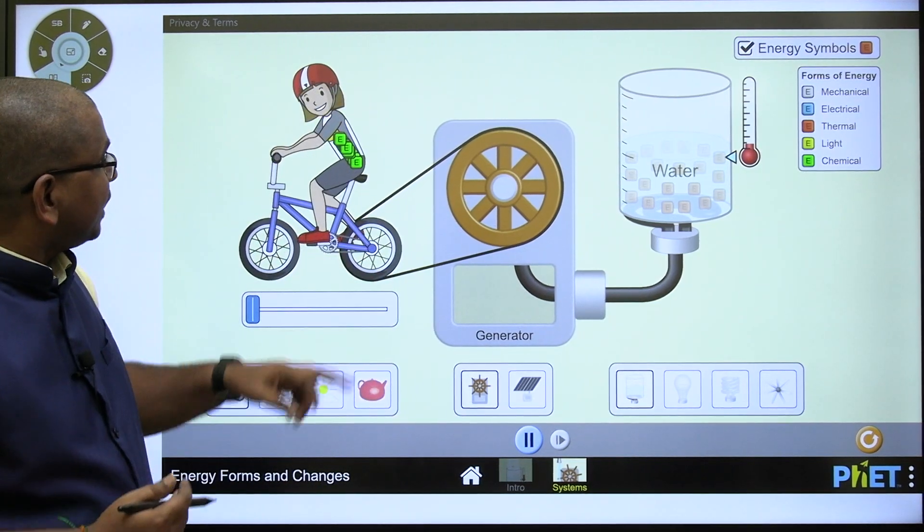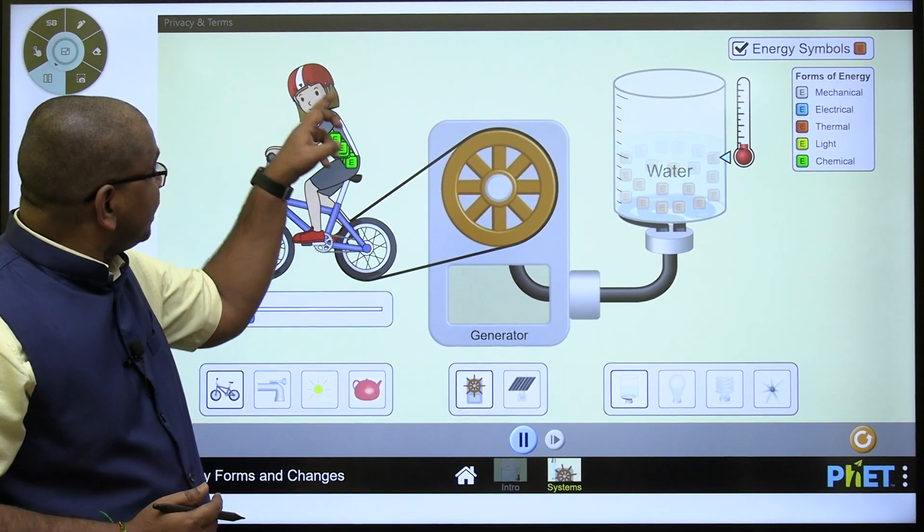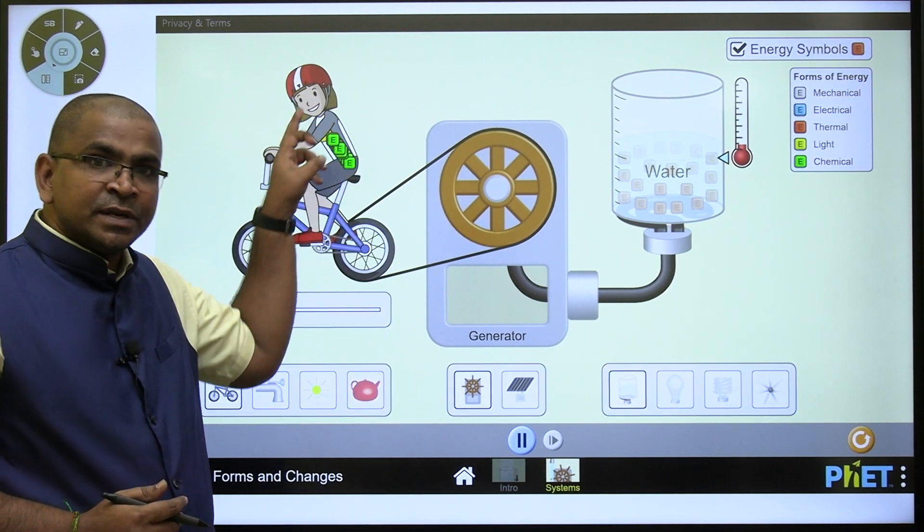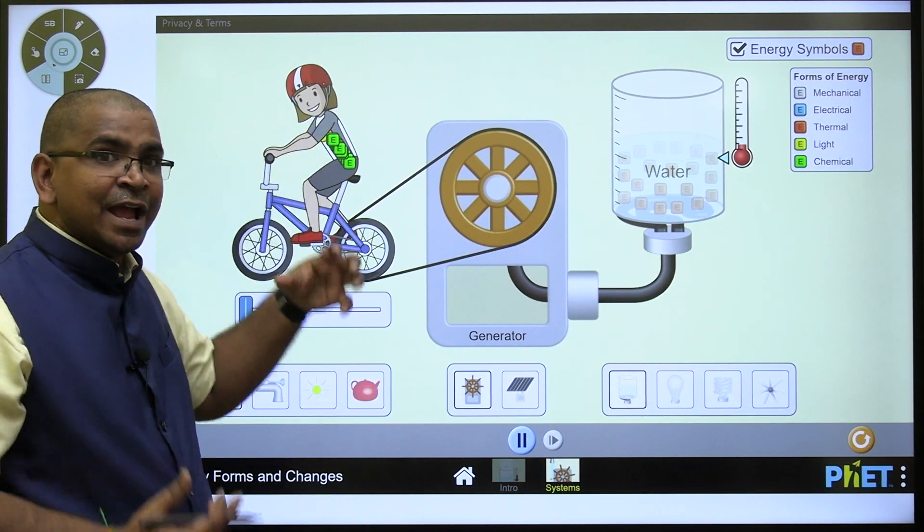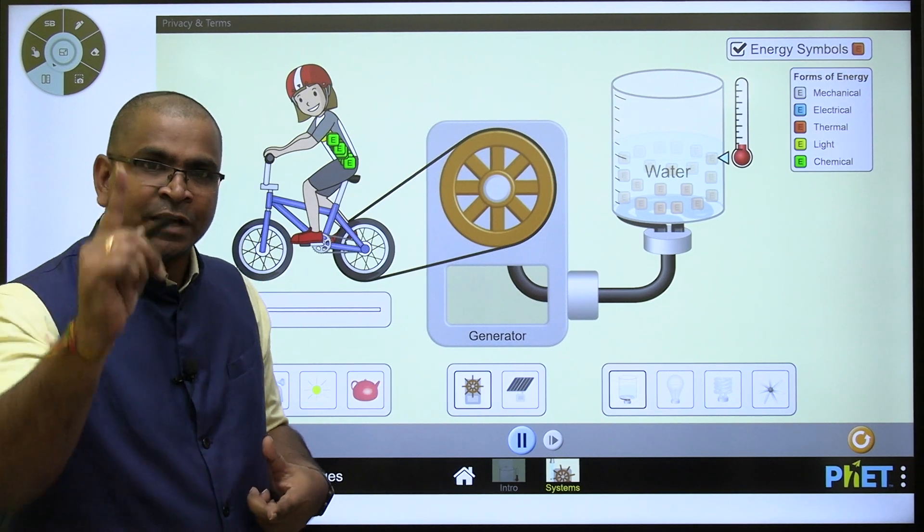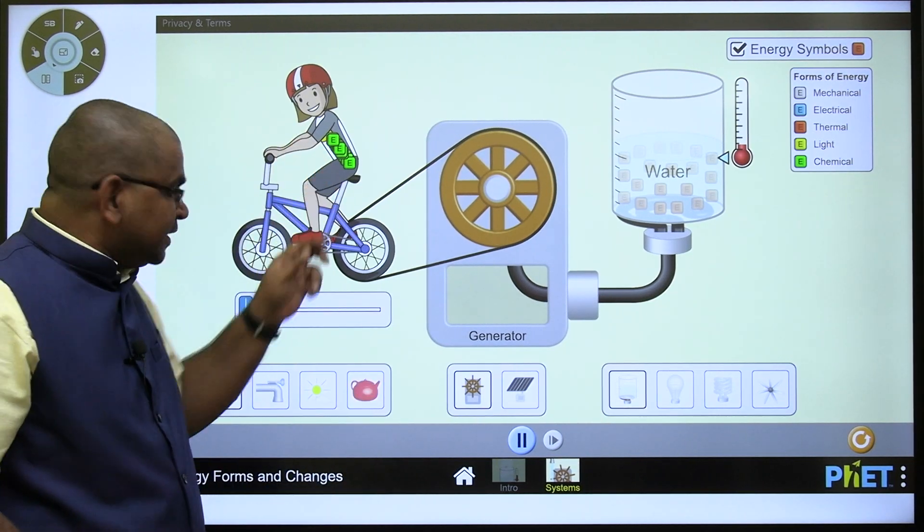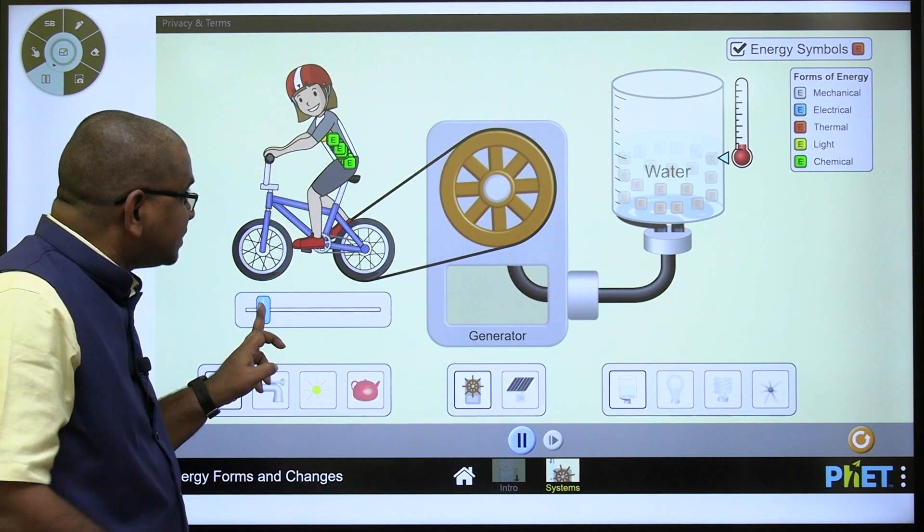Suppose if you observe clearly here, the initial energy available is this person. Assume yourself - you have energy in your body and that energy is chemical energy. Suppose if you start pedaling, what is happening? See here, you are spending your chemical energy on pedaling this wheel of the cycle and this is mechanical energy.